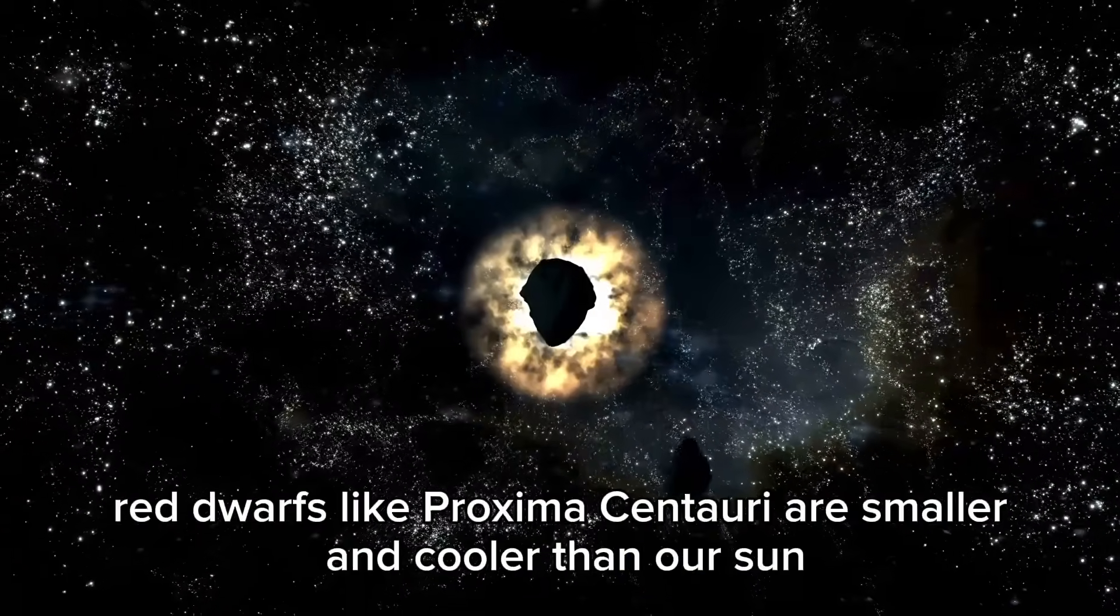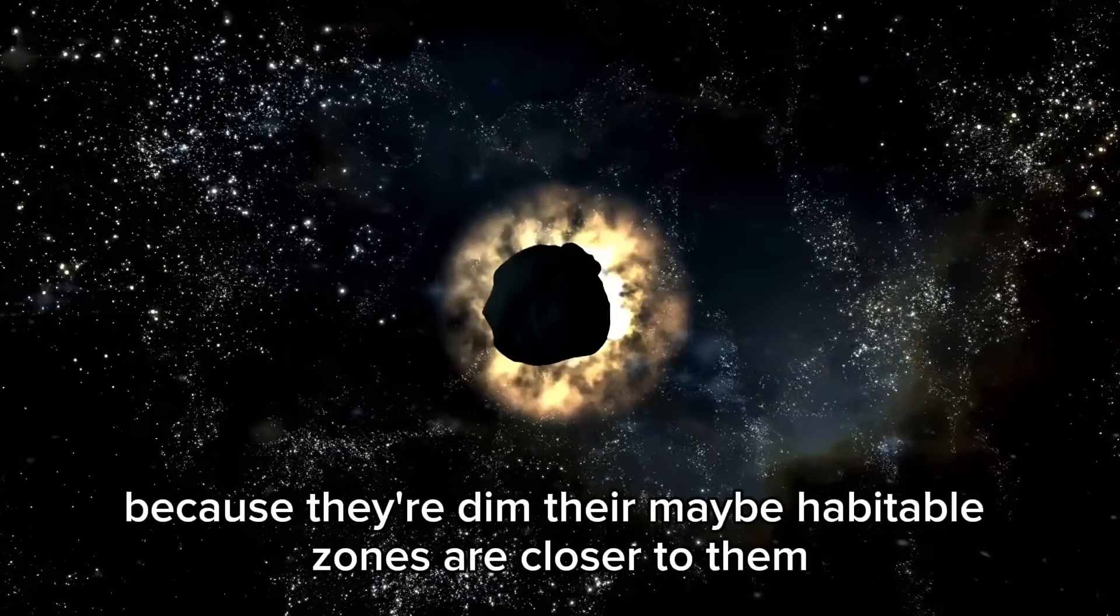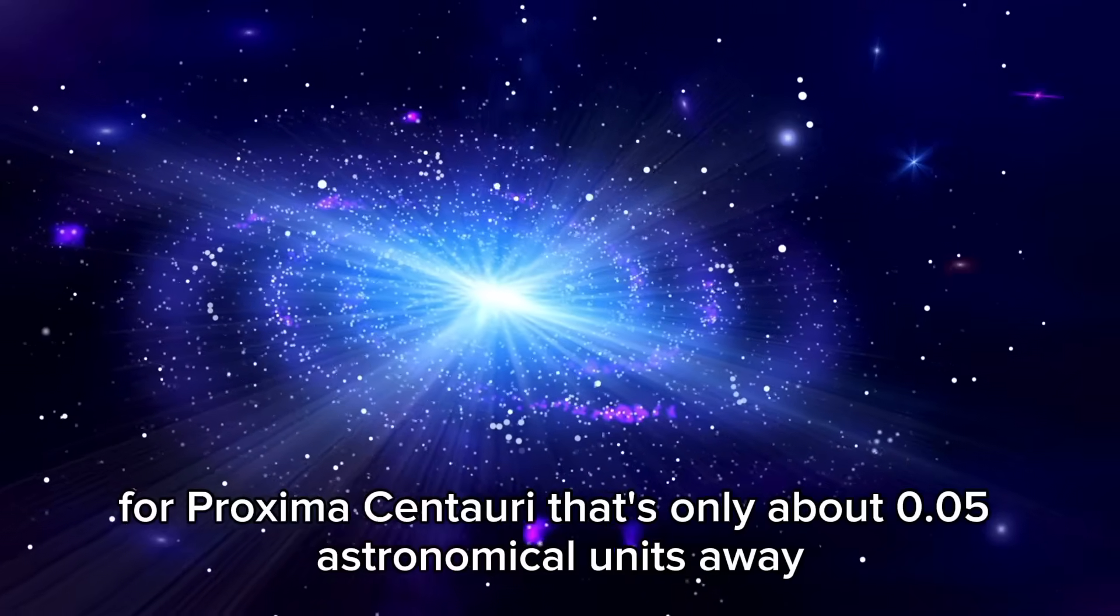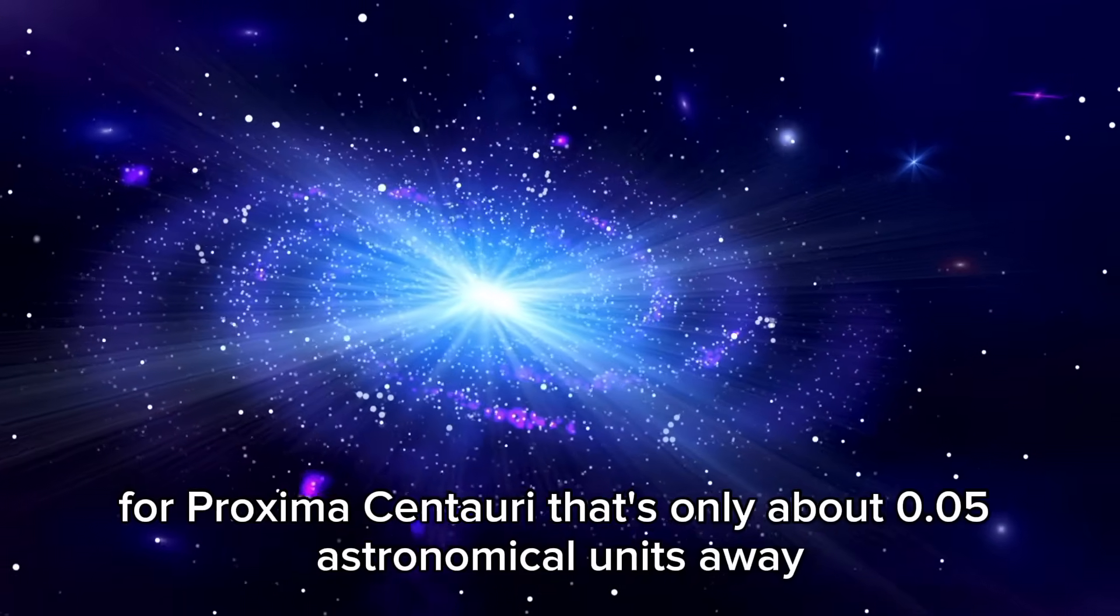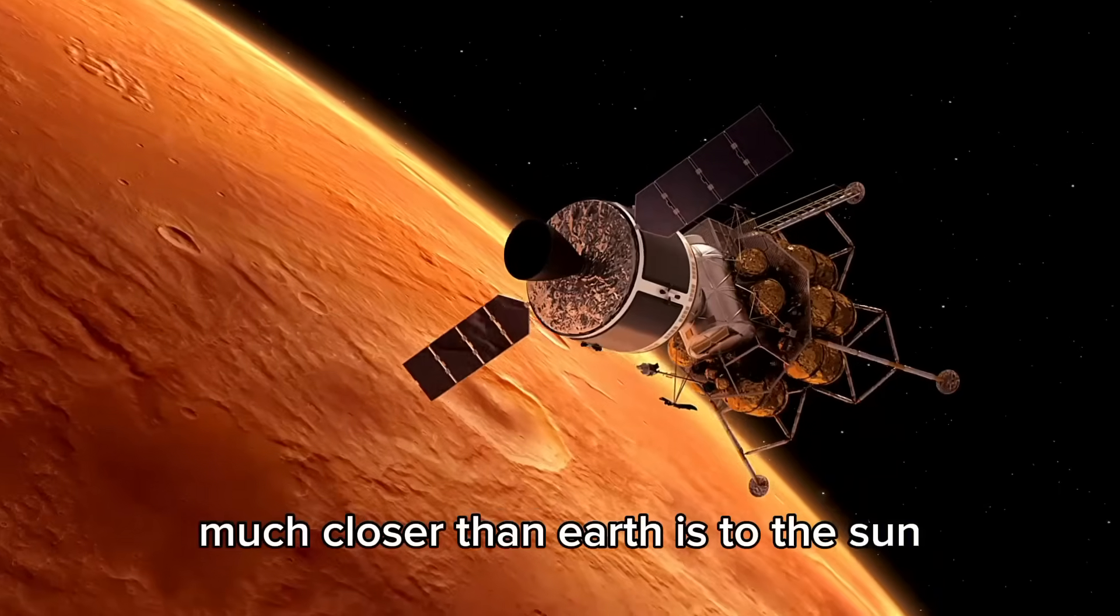Red dwarfs, like Proxima Centauri, are smaller and cooler than our sun and last a whole lot longer. Because they're dim, their habitable zones are closer to them. For Proxima Centauri, that's only about 0.05 astronomical units away, much closer than Earth is to the sun.